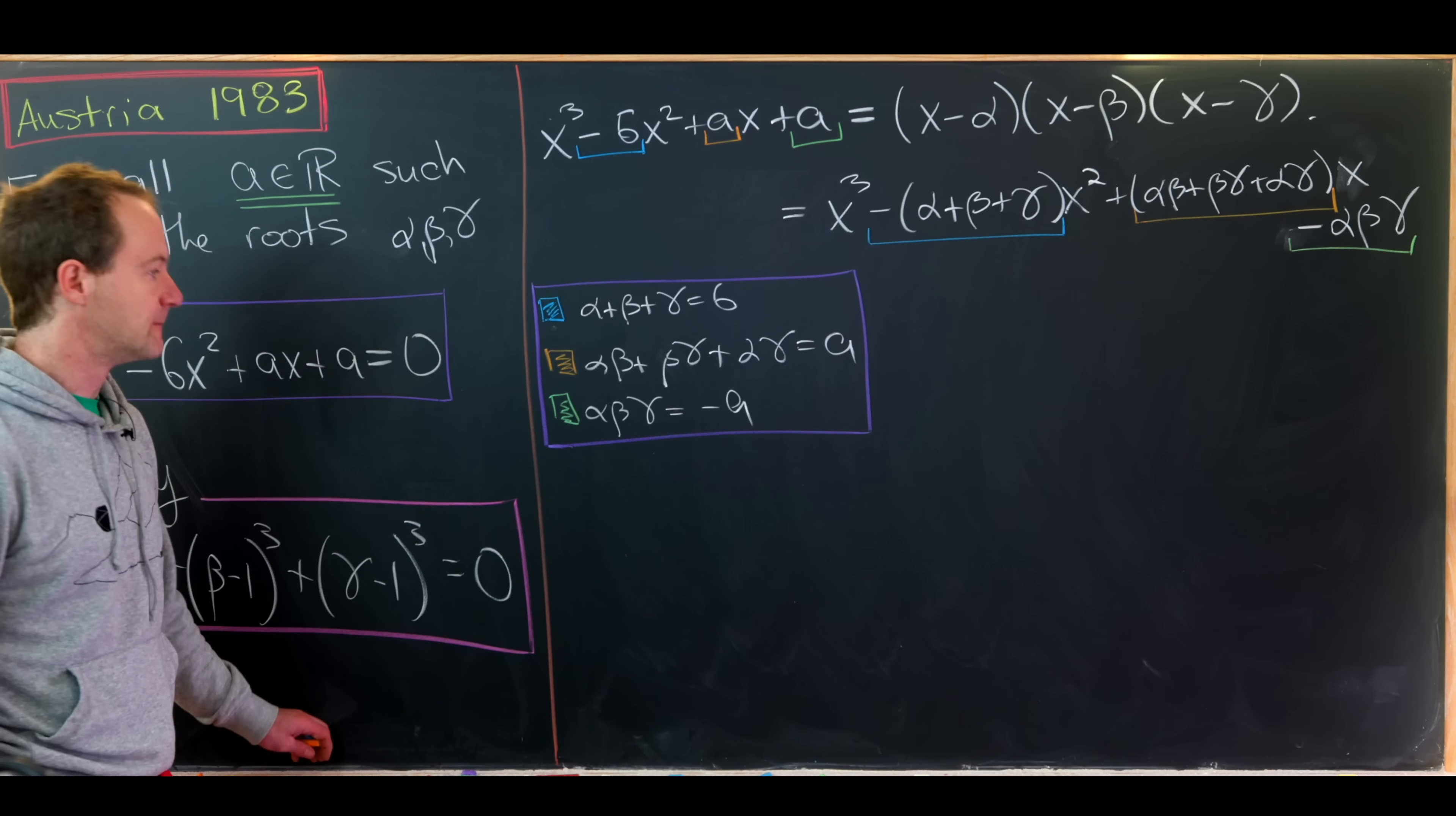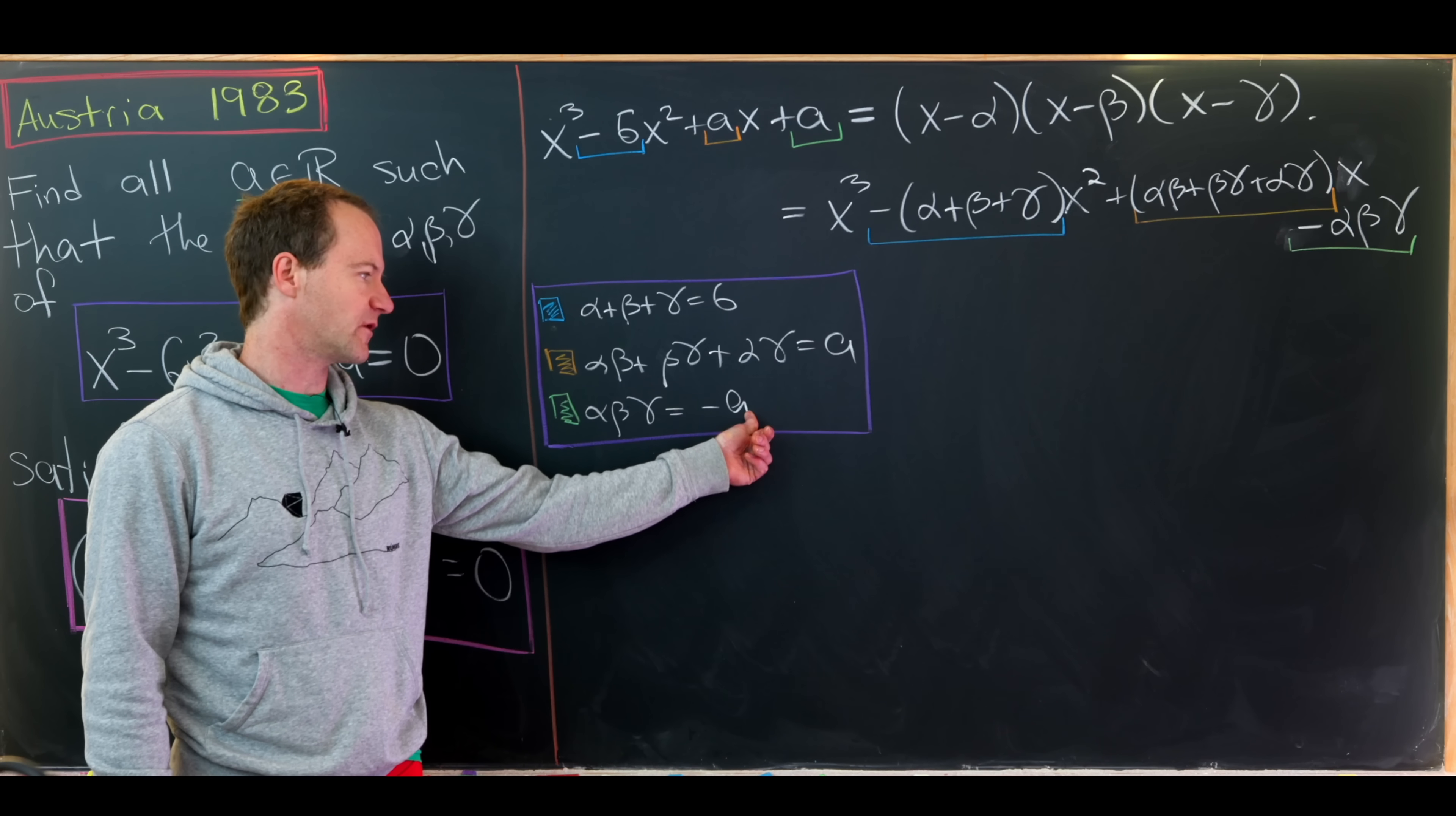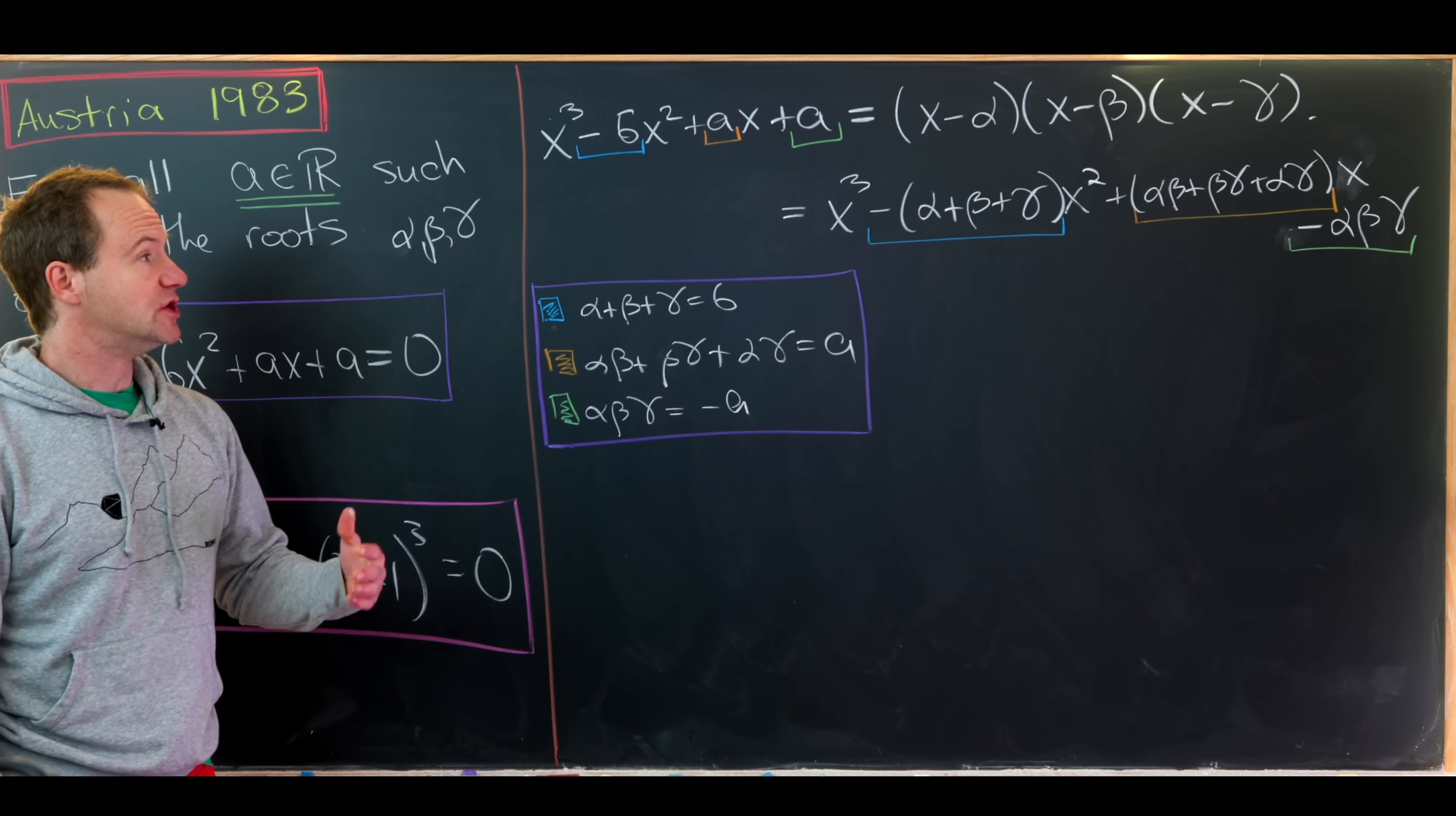But if we want to solve for a in terms of a number, we need a little bit more information than this. Instead of having three equations and four unknowns, we need four equations and four unknowns. But in fact, we can get that fairly easily using, again, that alpha, beta, and gamma are the roots of this polynomial.